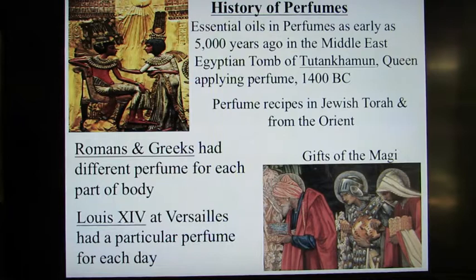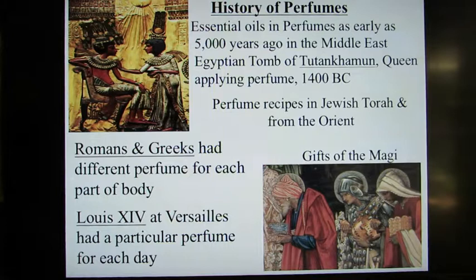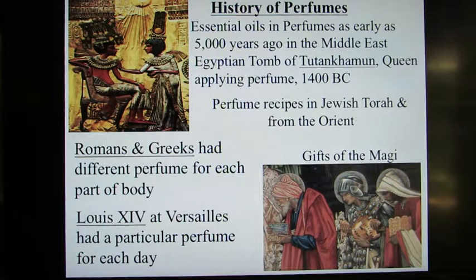The Romans and Greeks had a different perfume for each part of the body. Louis XIV was a particularly avid fan of perfumes — he had a particular perfume for each day and is said to have squirted arriving guests with a touch of perfume at the Palace of Versailles. Queen Cleopatra reportedly soaked her sails with perfumes on the Royal Barge to meet Mark Antony in 44 BC. The gifts of the Magi in Christianity — frankincense, myrrh, and gold — were considered symbols of spirituality and divinity.